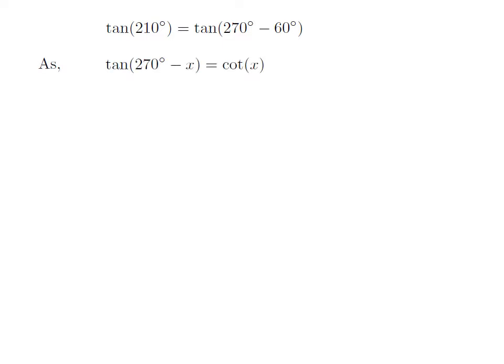As we know, the trigonometry identity tangent of 270 degrees minus x is equal to cotangent of x.